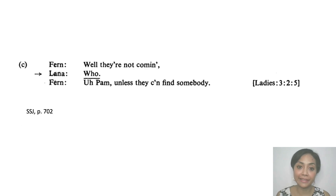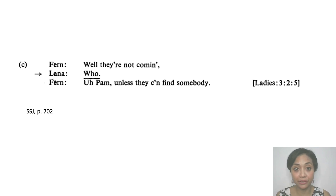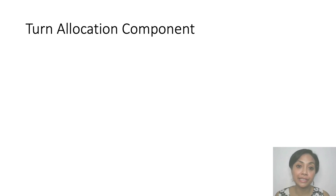Let's look at this extract on our screen. The turns here occur in different lengths and shapes. Fern says "well, they are not coming," and then Lana says "who?" Both "well, they are not coming" and "who?" — as far as the system is concerned — are the same. They are turns. That was the turn constructional component of the model proposed in SSJ 1974.